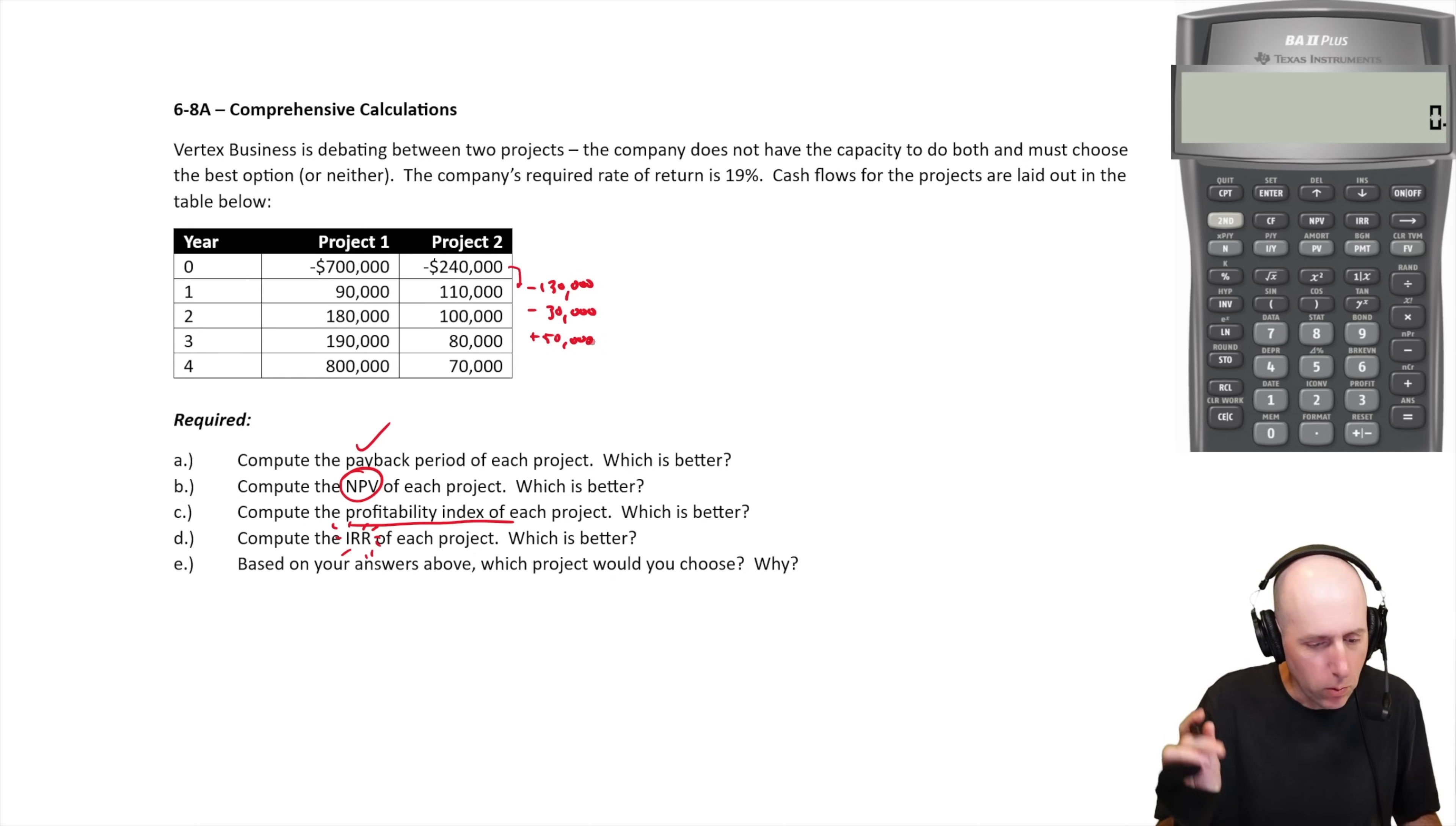So we took one full year to come out of the hole, we took two full years to come out of the hole, but we didn't take the full third year to come out of the hole. We had 30 grand that we needed, and we made 80. So it took us a partial year 30,000 divided by 80,000. It took us about point 375 of a year. So the answer here is 2.375 years. That's how long it took us to pay back 2.375 years.